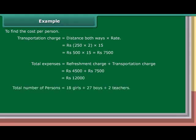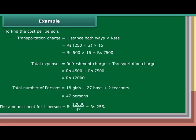Total number of persons is equal to 18 girls plus 27 boys plus 2 teachers, which is equal to 47 persons. The amount spent for one person is equal to Rs. 12,000 upon 47, which is equal to Rs. 255.